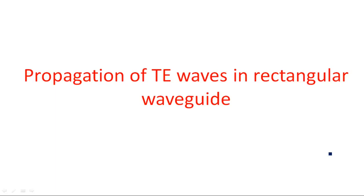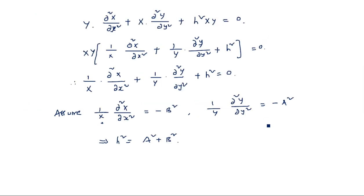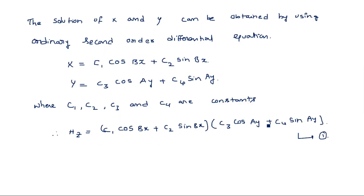In this video I am continuing the previous derivation of propagation of TE waves in rectangular waveguides. We have taken the standard TE equation, assumed hz equal to X(x) times Y(y) using the two-variable method, then taken h square equal to a square plus b square. After simplifying, we calculated X and Y as c1 cos(bx) plus c2 sin(bx), and c3 cos(ay) plus c4 sin(ay).